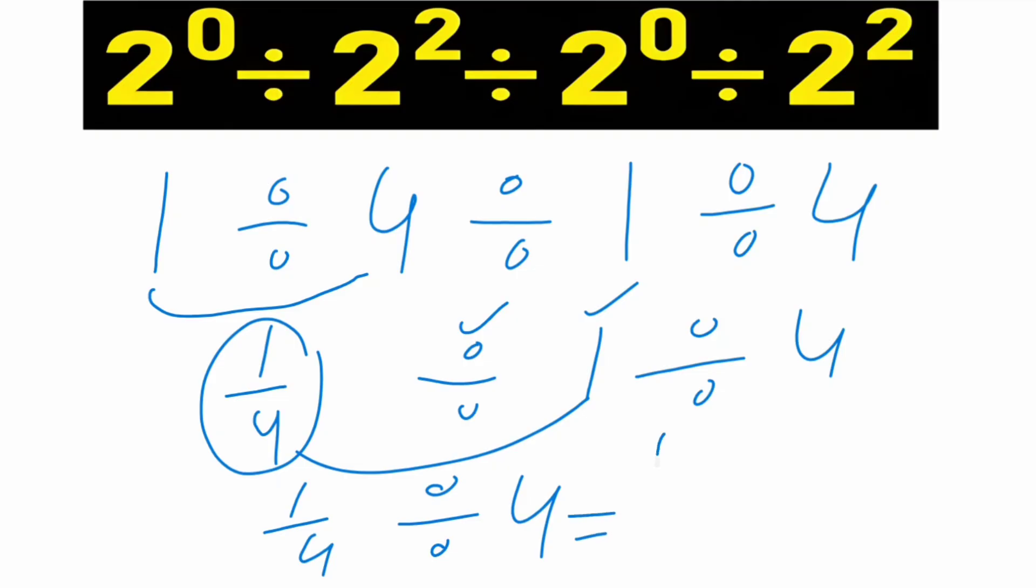1 over 4 divide, convert and multiply 4 in the form of 1 over 4. So 1 multiply 1 is equal to 1, 4 multiply 4 is equal to 16. So you have to tell in the comments which method is correct. Thank you for watching.